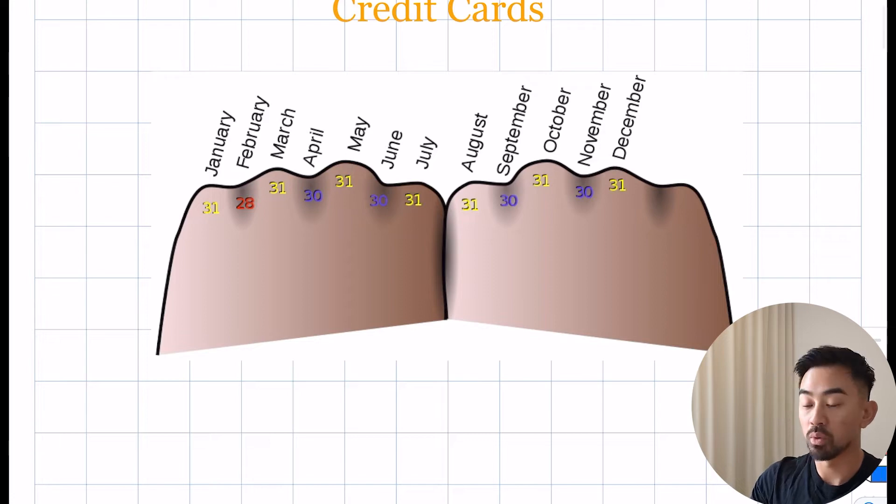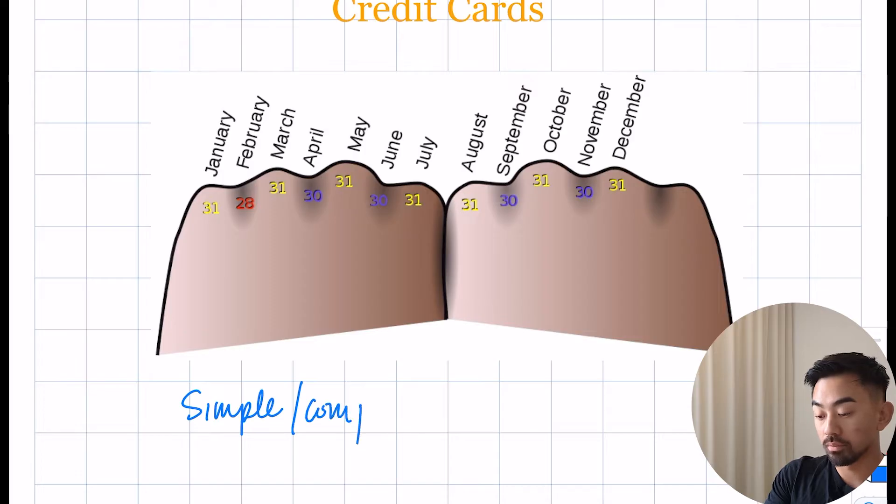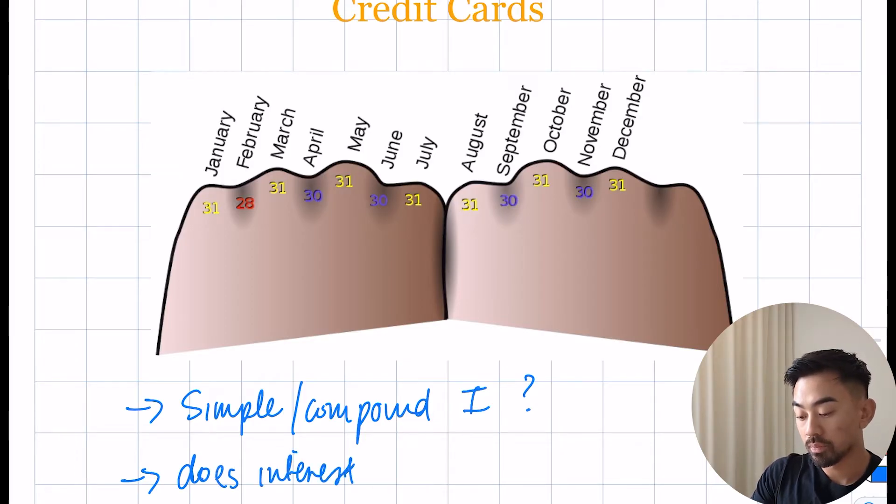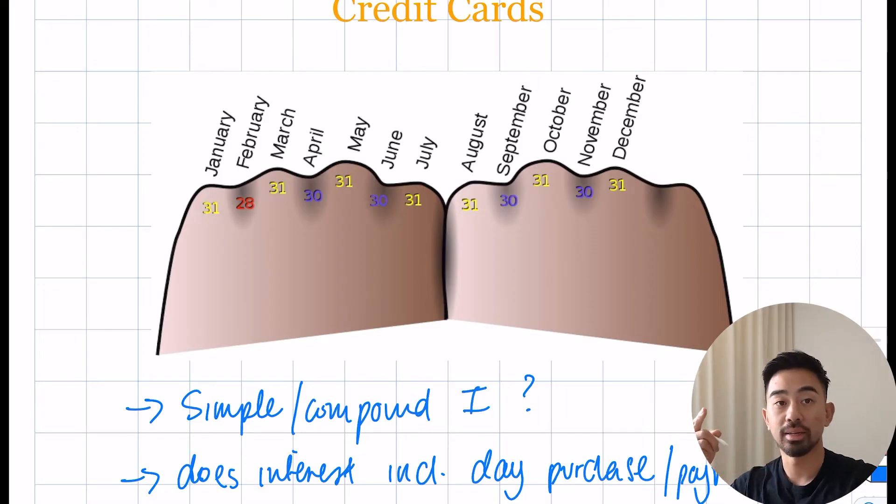Something important to understand or recognize when we do these questions is: you want to ask yourself is it simple or compound interest? That is obviously going to be an important factor. Also, one more thing - does the interest include the day of purchase or payment? Because if that's the case, you're actually going to have to plus one day, however many number of days there are from the day you purchase it to the day you pay it.